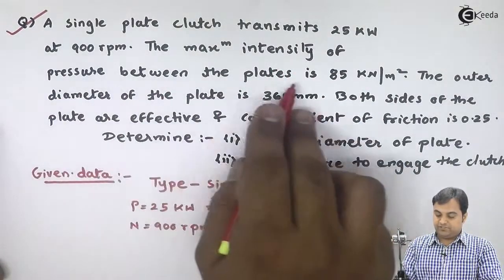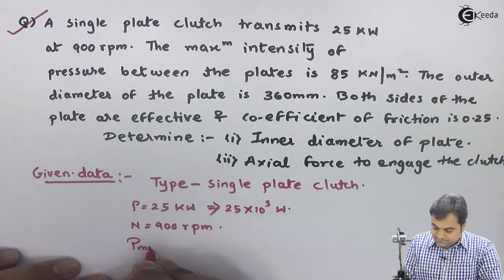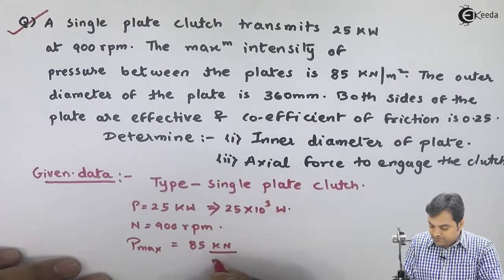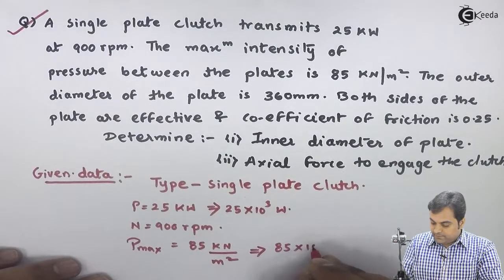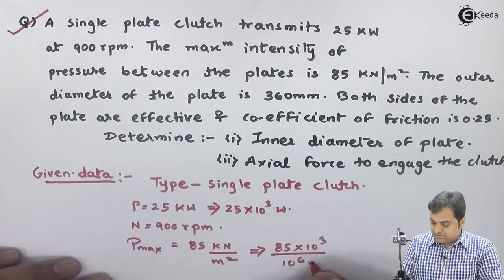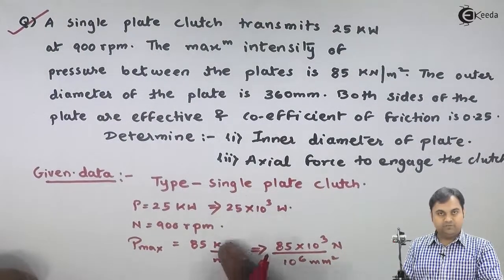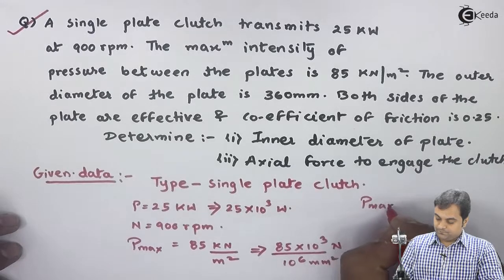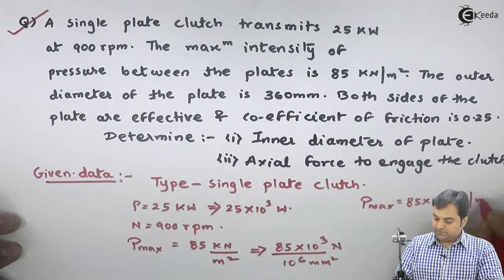The maximum intensity of pressure between the plates is 85 kilonewton per meter square. So P max is 85 kilonewton per meter square. I will convert this: it becomes 85 into 10 raise to 3 divided by 10 raise to 6 Newton per mm square. So P max is converted from kilonewton per meter square into Newton per mm square, and therefore P max equals 85 into 10 raise to minus 3 Newton per mm square.